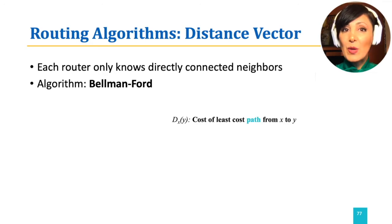To compute this, we assume dx(y) shows cost of least cost path from x to y. This is also called the element y of distance vector of node x. The cost of a direct link from x to y is given by cost(x,y).